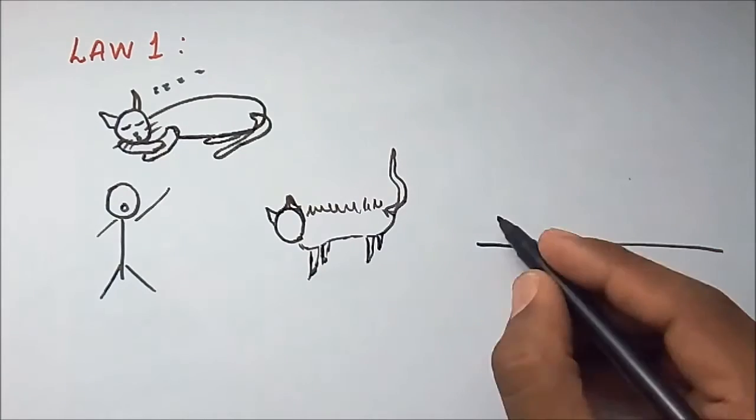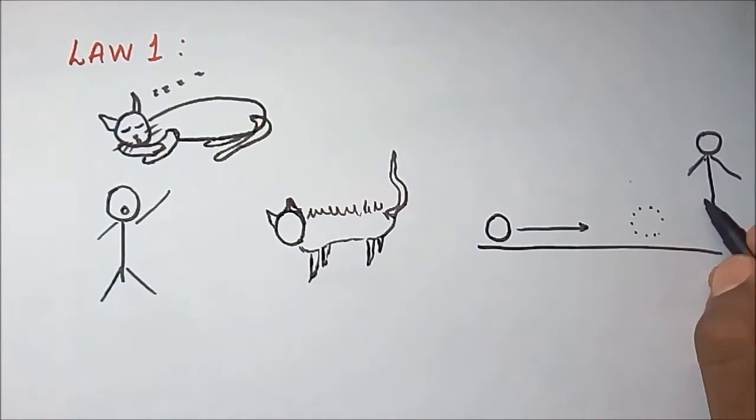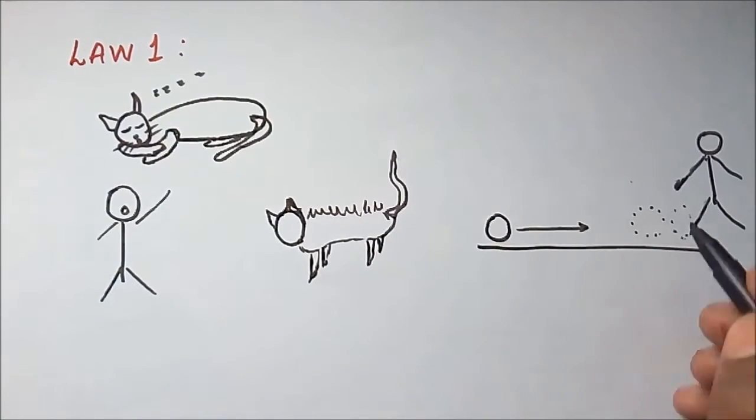For example, a ball rolling on a smooth surface can only be stopped by applying an external force upon it.